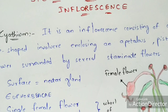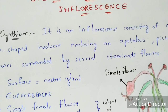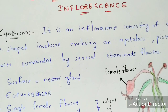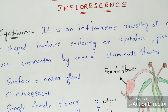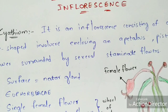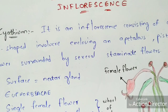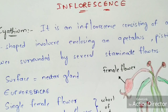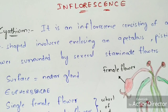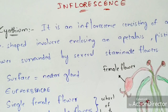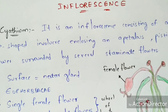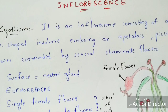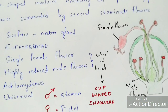In this video I'm going to explain special types of inflorescence. Normally there are three types: cyatheum, hypanthodium, and verticillaster. Coming to the first one, cyatheum type of inflorescence — I am not going to read the definition now; after the explanation I will read the definition so that you can easily understand.